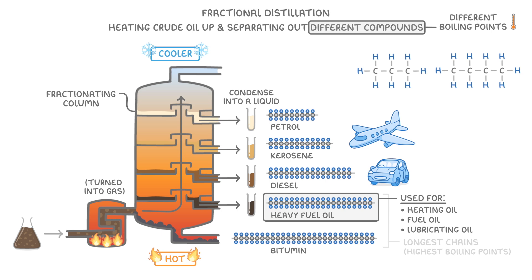Some hydrocarbons, though, are so short and have such low boiling points that they stay as a gas the entire time. For example, LPG, which stands for liquefied petroleum gas, contains mainly propane and butane, which are both very short chain alkanes.